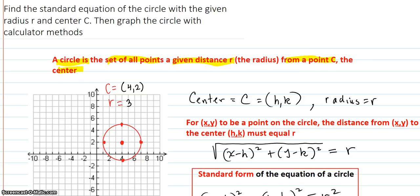So in other words, if this is the center at (4, 2) right here, then every point on the circle is a radius 3 away from that center. And that's what makes the circle look the way it does.